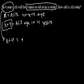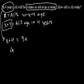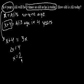We know today he's x, so that's going to be equal to 3x. Now we just solve for x. Subtract x from both sides, you get 2x is equal to 4, so x equals 2. Ali is two years old today.